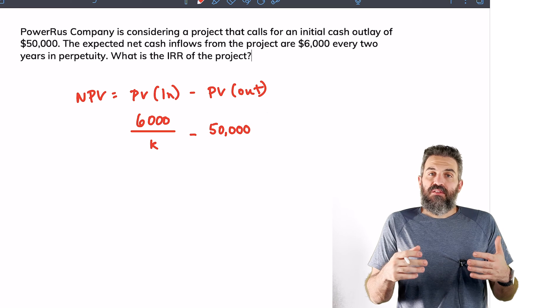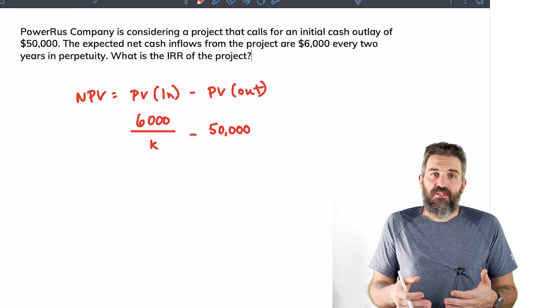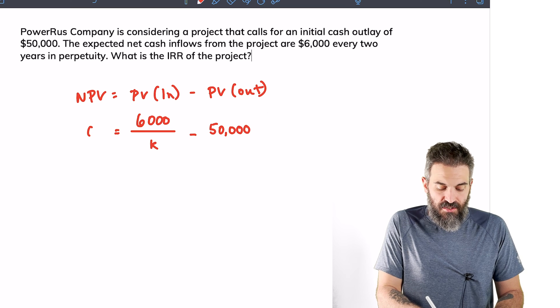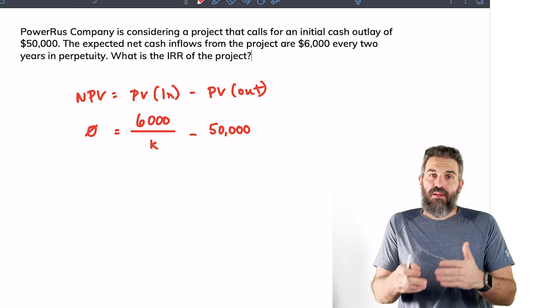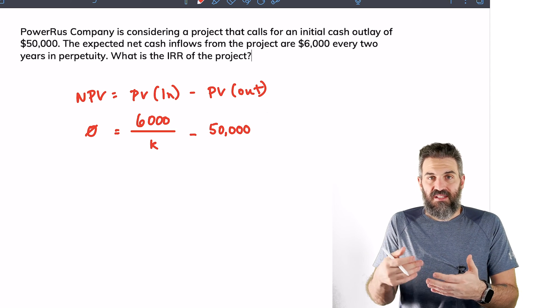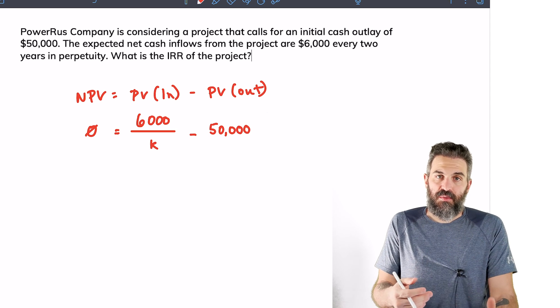To find the internal rate of return, all you need to do is set K as the unknown and set your net present value to zero. That's the relationship between IRR and NPV - if IRR equals K, or if your discount rate is the internal rate of return, then your NPV would be zero.